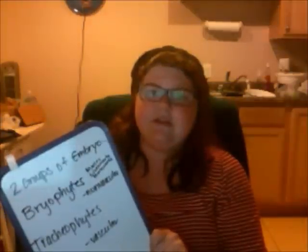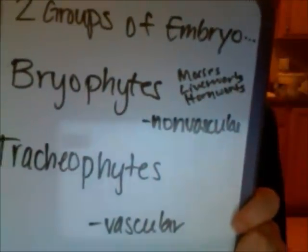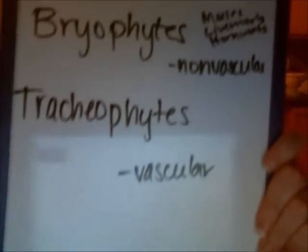So, what are in your bryophytes? Your bryophytes are like your mosses, your liverworts, and your hornworts — and hogworts. Just kidding, that last one is not real. But your bryophytes are your mosses, your liverworts, and your hornworts. And tracheophytes are everything else, starting with ferns and moving on up to all your flowering plants, and they are vascular.